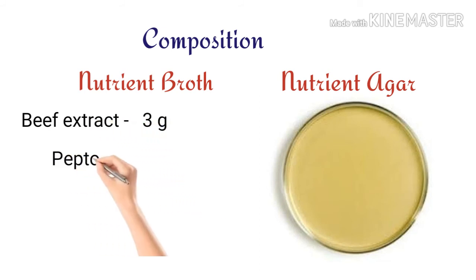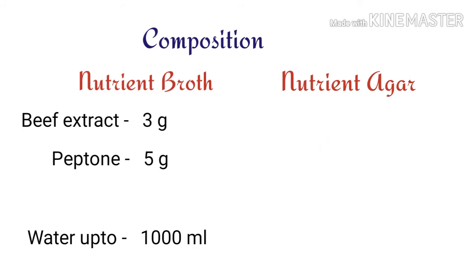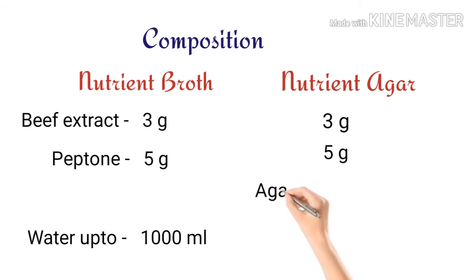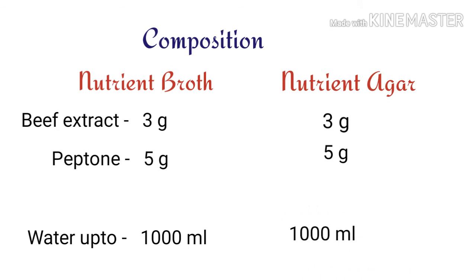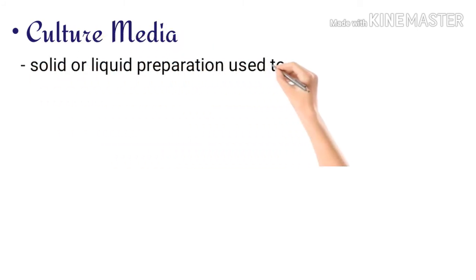The composition of nutrient broth is: beef extract 3 grams, peptone 5 grams, water up to 1000 ml. For nutrient agar, the composition is: beef extract 3 grams, peptone 5 grams, agar 15 grams, and water up to 1000 ml.